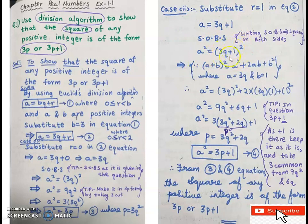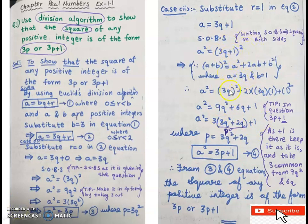Expanding (3Q + 1)² using a² + 2ab + b²: a² = 9Q² + 6Q + 1. Now to get the form 3p + 1, keep the +1 aside. Take 3 common from 9Q² + 6Q: a² = 3(3Q² + 2Q) + 1. Assume p = 3Q² + 2Q. Therefore a² = 3p + 1.